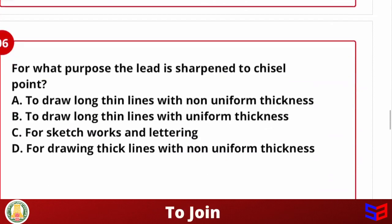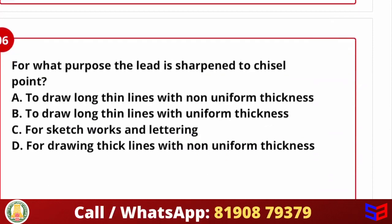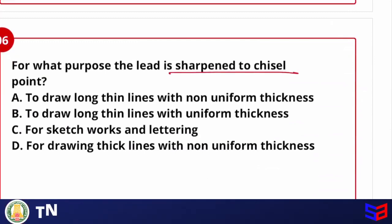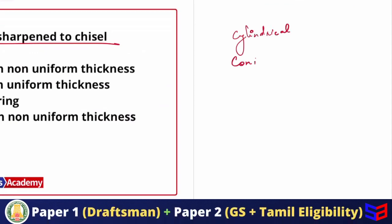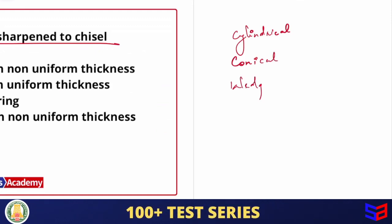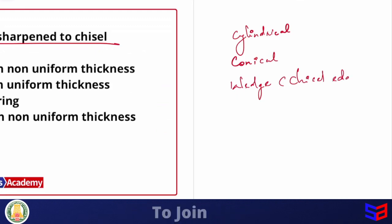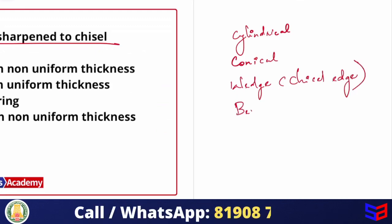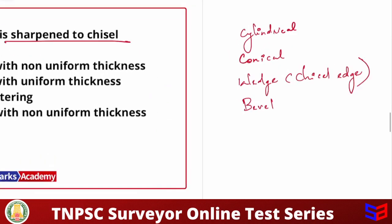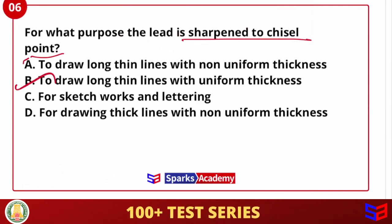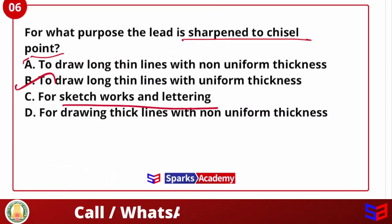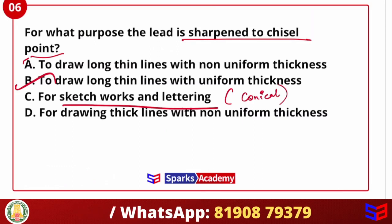For what purpose is the pencil lead sharpened to a chisel point? When we sharpen a pencil, the main shapes are cylindrical, conical, and wedge (chisel). The chisel point is used to draw long thin lines with uniform thickness. For sketching or lettering work, you would sharpen the pencil to a conical shape instead.